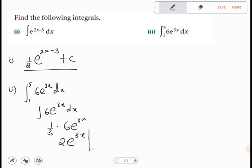Then we have the lower limit 1 and the upper limit is 5. So that means we are going to have 2e, where there's x we put 5 there, minus 2e where there is x we put 1.